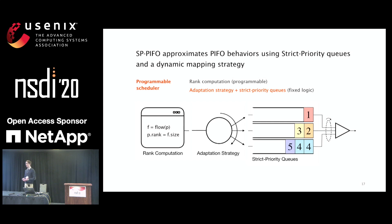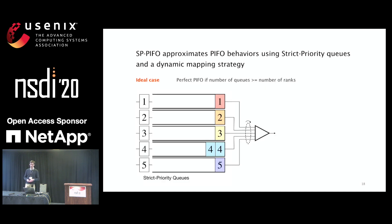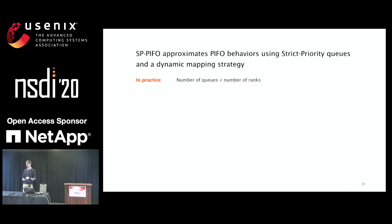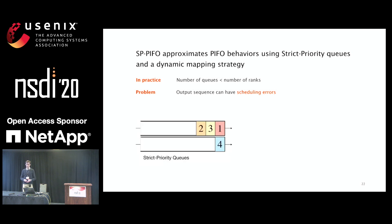SP-PIFO presents a different abstraction: we keep the rank computation (the programmable part), but substitute the PIFO queue with a set of strict priority queues and an adaptation strategy that defines how to map packet ranks to those priority queues. When the number of queues is very large, this is straightforward — we simply map ranks to different priority queues in order of priority. The problem is that in practice the number of queues is limited, so ranks must share queues, leading to potential scheduling errors.